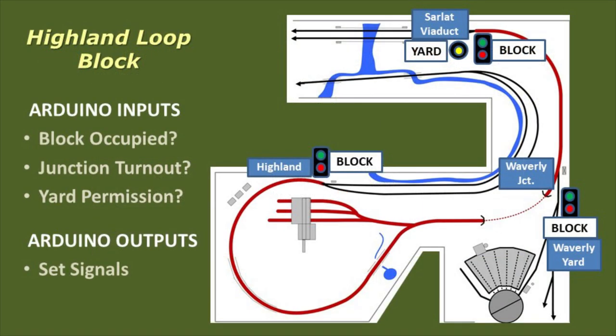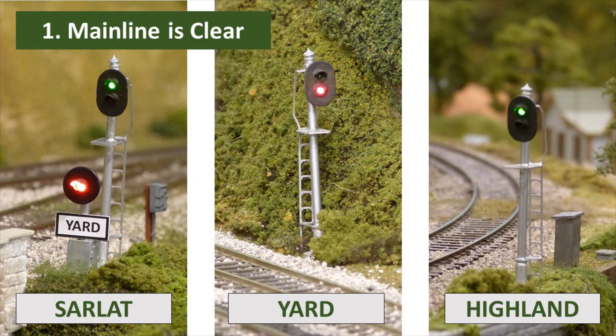After we've programmed the Arduino to check the status of Highland Loop block and set the signals accordingly, here's the results. If trains are planning to run on the main line and the block is clear, then we have green block signals at Sarlott Viaduct and Highland, and a red block signal in the yard approaching the junction.